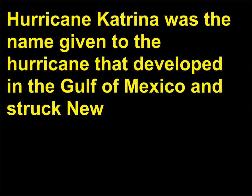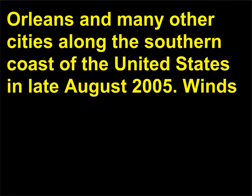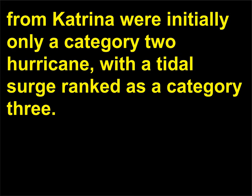What was Hurricane Katrina? Hurricane Katrina was the name given to the hurricane that developed in the Gulf of Mexico and struck New Orleans and many other cities along the southern coast of the United States in late August 2005. Winds from Katrina were initially only a Category 2 hurricane, with a tidal surge ranked as a Category 3.